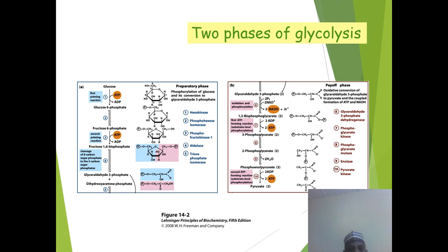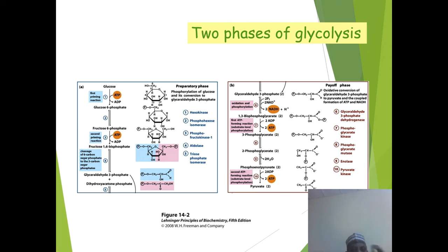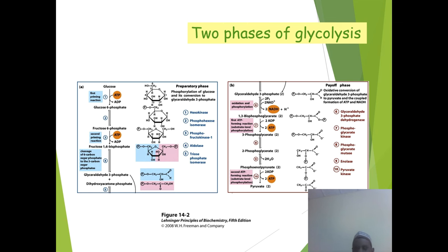In phase one, ATP is consumed. Glucose is converted to glucose-6-phosphate consuming one ATP, then fructose-6-phosphate is converted to fructose-1,6-bisphosphate consuming another ATP. This is the energy investment phase. In the energy payoff phase, ATP is generated at two subsequent steps.